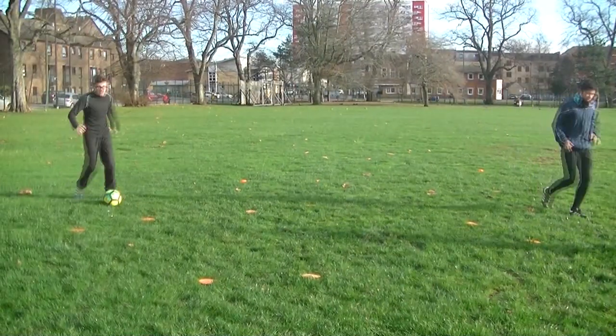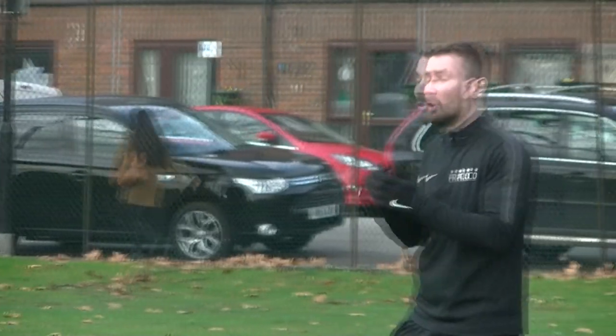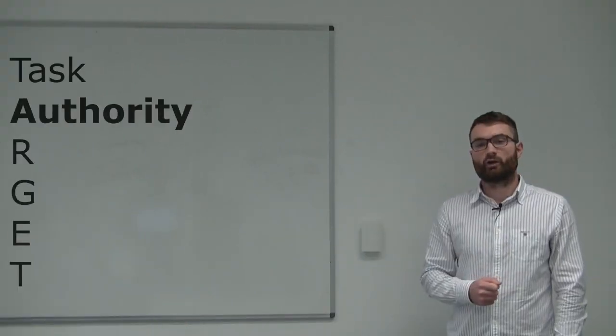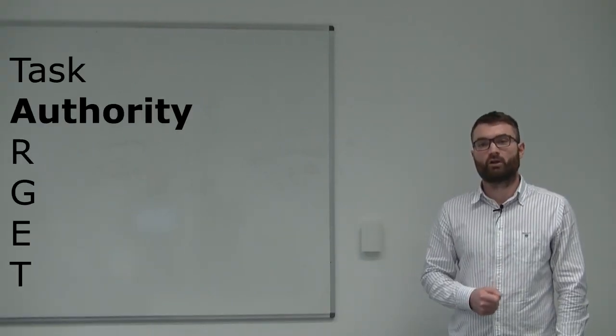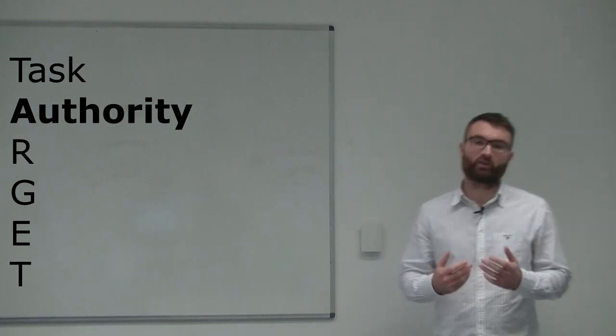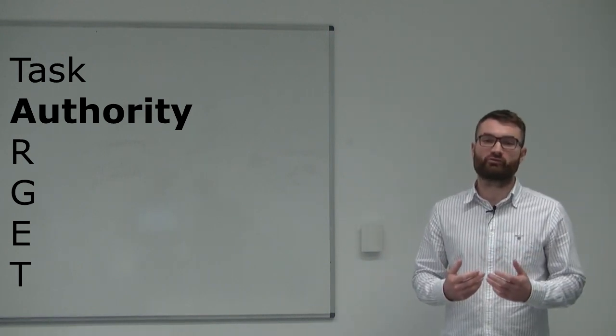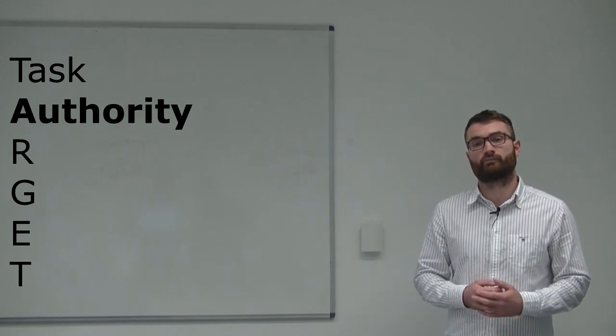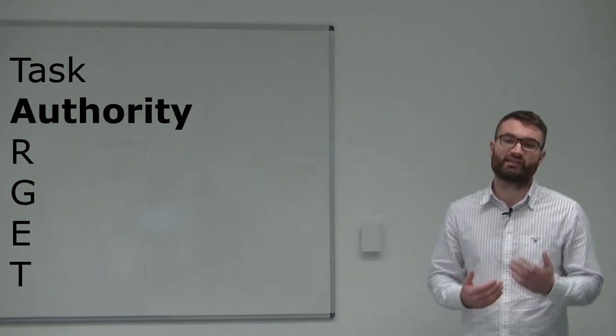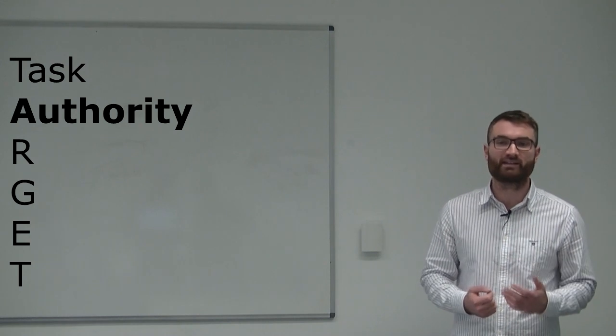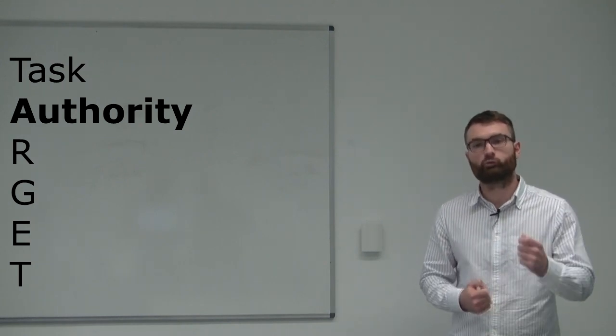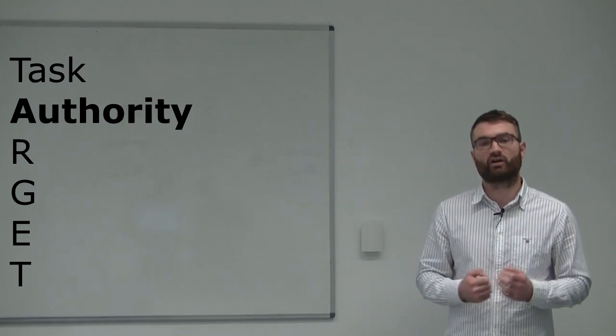Make sure that the feedback is on the progress of the player and the task. Next in the target framework is authority. Authority is allowing players to participate in the decision making process. This could include letting players set their own rules in the game. In other words, authority is whether the player has the autonomy to decide when and how to do the task. Which is why you should link authority and task.